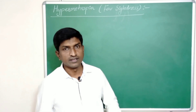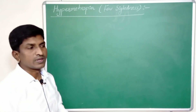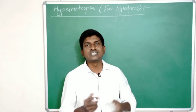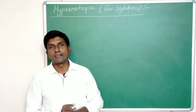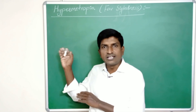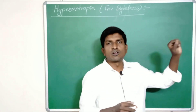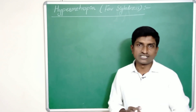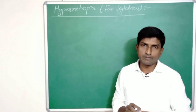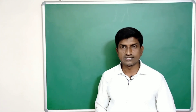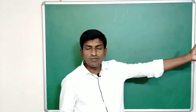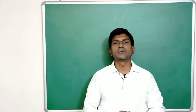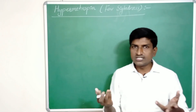First, what is hypermetropia? A person with hypermetropia can see distant objects clearly but cannot see nearer objects clearly. This defect is also called farsightedness, because the person can see only distant objects but cannot see close objects clearly.